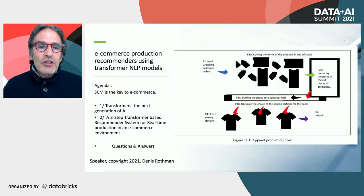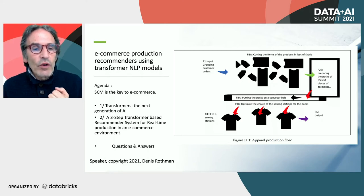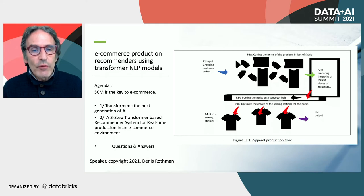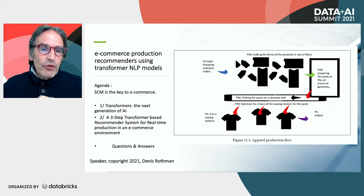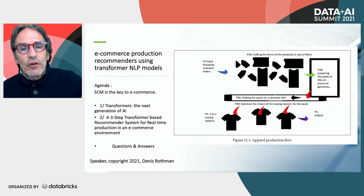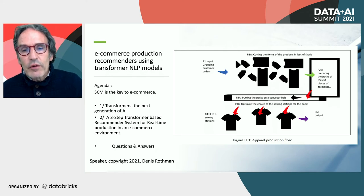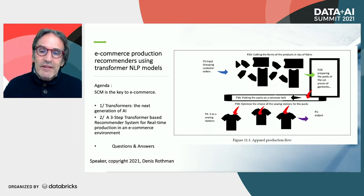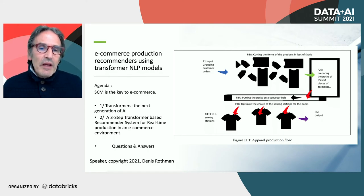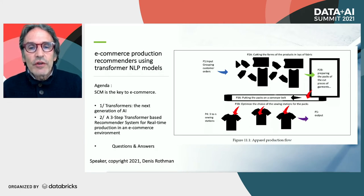Everyone imagines that e-commerce is just clicking a button online and someone delivers something the next day. But e-commerce is the whole flow from the customer order all the way down through all the little problems. When you're an Amazon, you want to group customers. If we're talking about clothing, you have to group the orders, cut your fabric into pieces, and then sew them together — you can't just give pieces of fabric to people.